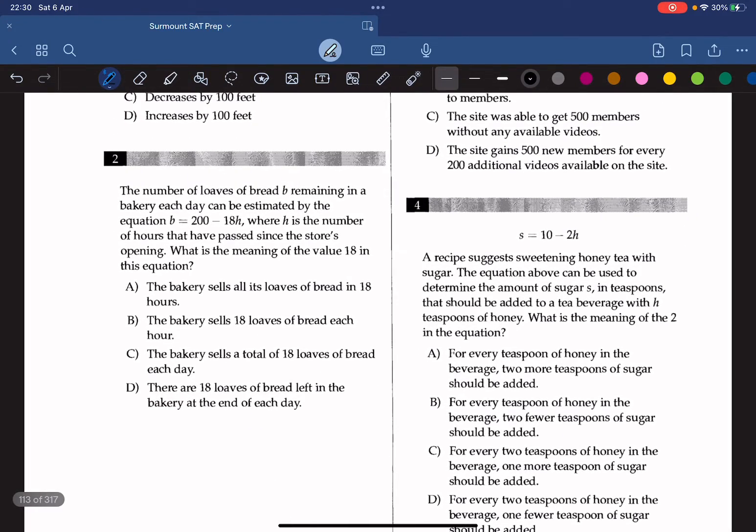The number of loaves of bread b remaining in a bakery each day can be estimated by the equation b equals 200 minus 18h, where h is the number of hours that have passed since the store's opening. What is the value of 18 in this equation? We know that the slope here is negative 18, and this is because there's a variable attached to the number 18, so it means that it's decreasing by 18 each hour. Since it's decreasing by 18 from the store, it means that the bakery is selling 18 loaves each hour, so the answer is B.